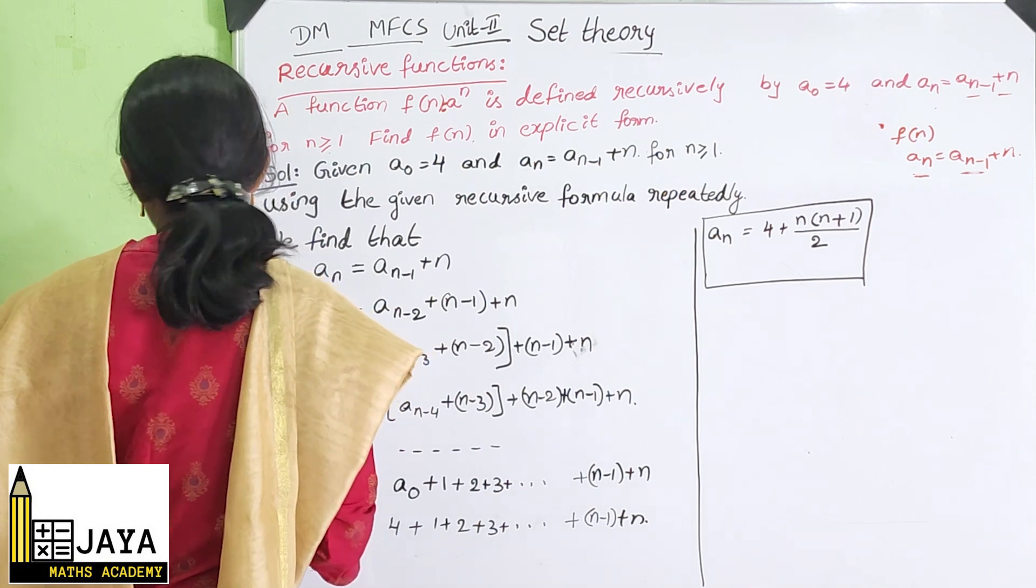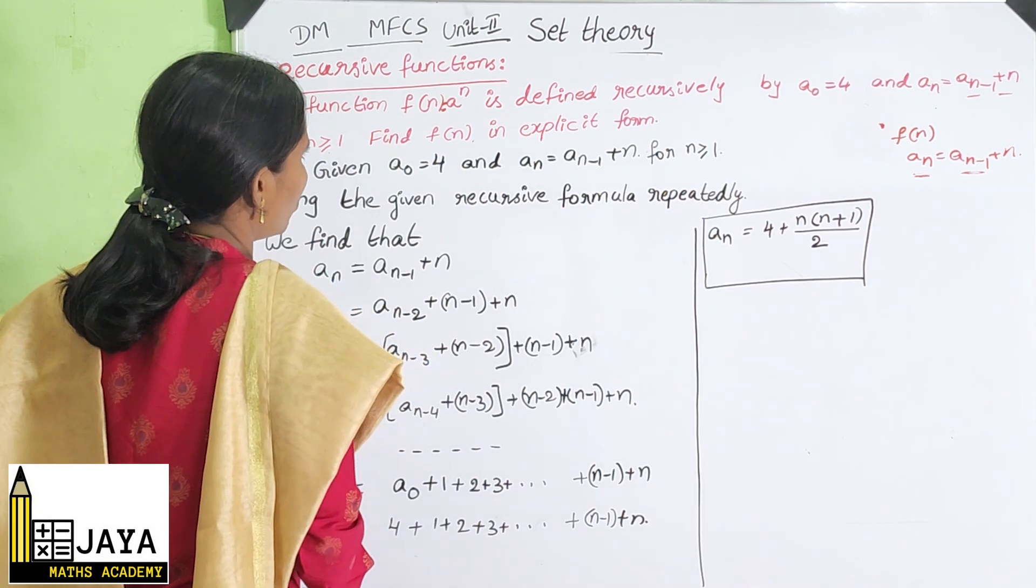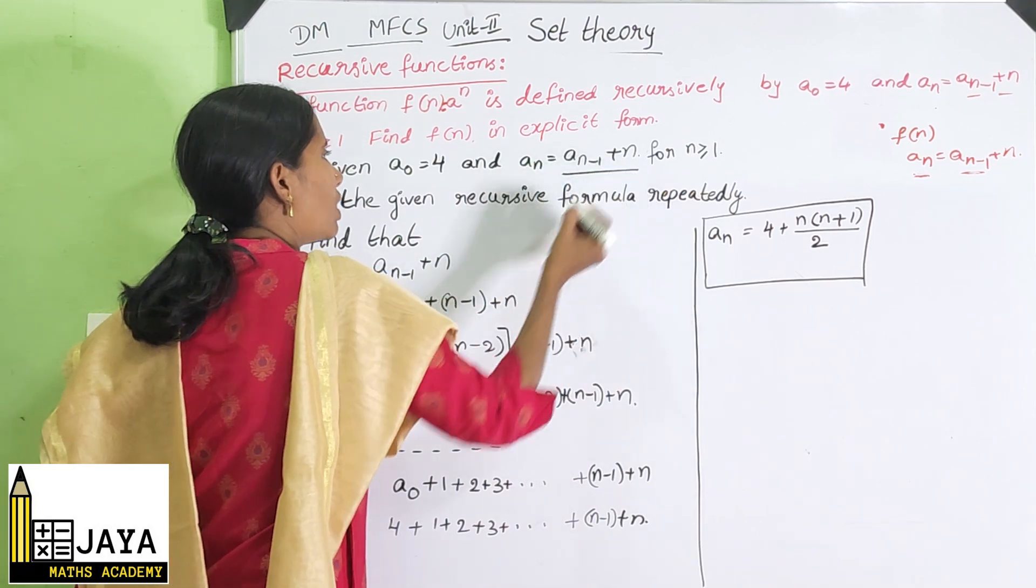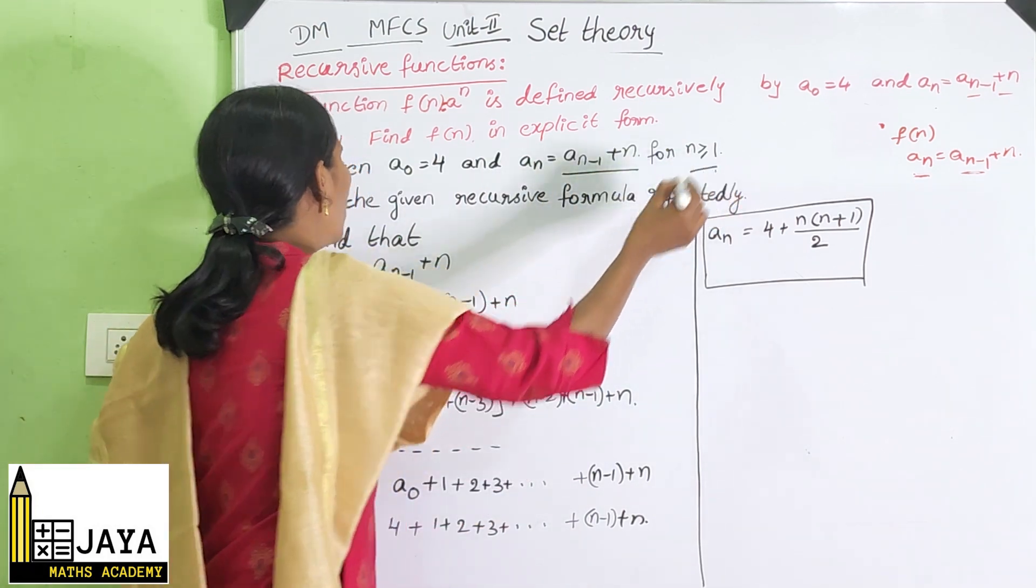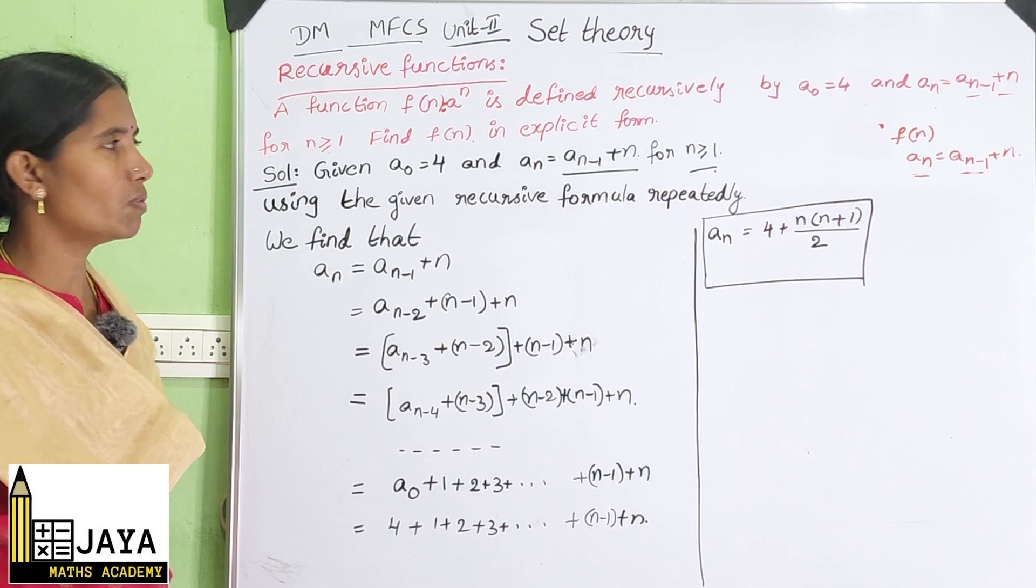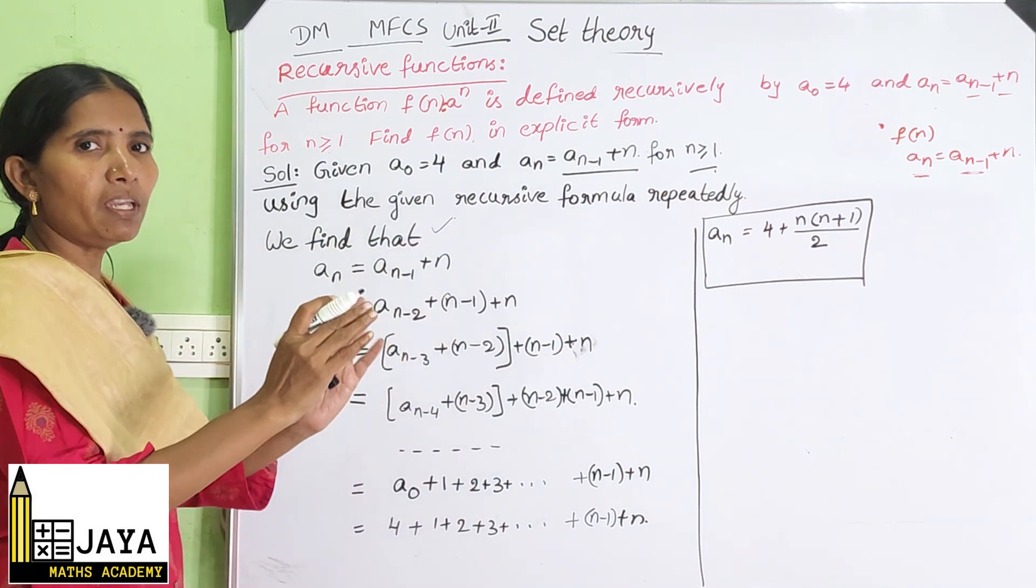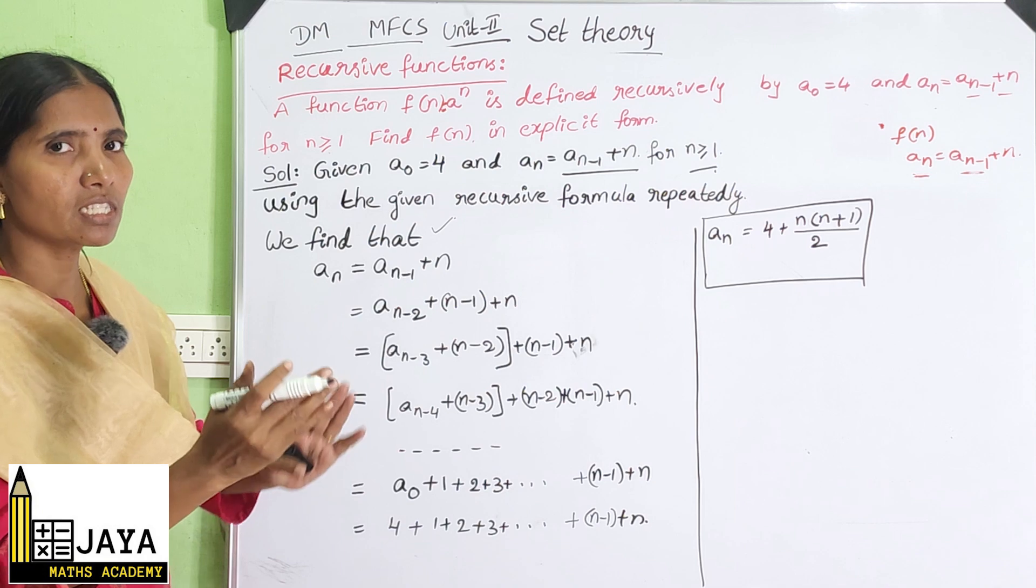To convert into explicit form, see here. Given A(0) = 4, A(n) = A(n-1) + n for n greater than or equal to 1. Using the given recursive formula repeatedly, we find that by repeated recursive formula, use it and substitute it.